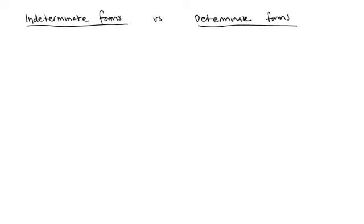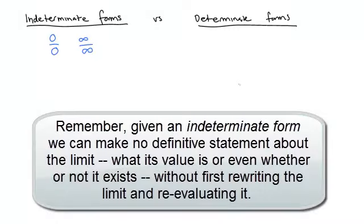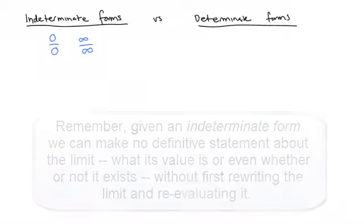Based on our work in Calc 1, there are two common improper forms—expressions that are not real numbers but occur in the first step of the limit process—that we call indeterminate: 0 over 0, and infinity over infinity. If we see either of these indeterminate forms, we can't make any statement at all about what the limiting value is.